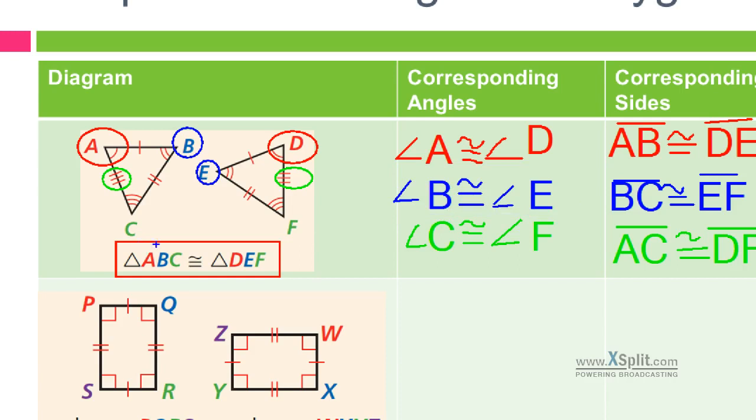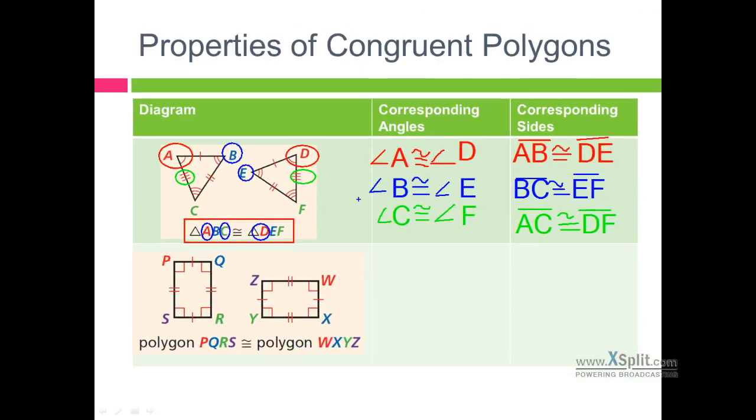The sides are also important. Notice that for example BC was the second and third letter. EF is the second and third letter. So BC is congruent to EF. It corresponds and is congruent. Because they're the second and the third letter. First and third letter, we've got AC corresponding with DF. AC and DF are going to correspond together as well. So order of the lettering is extremely important here.